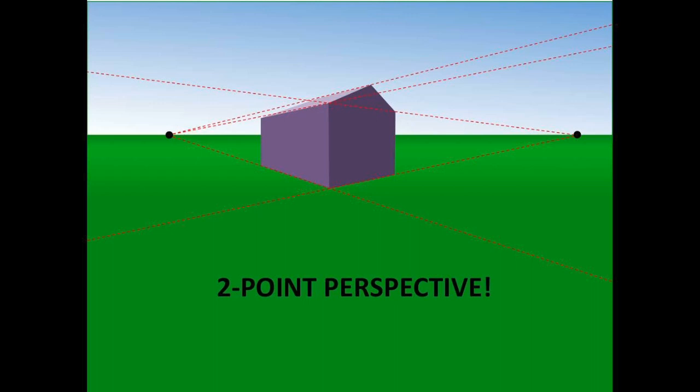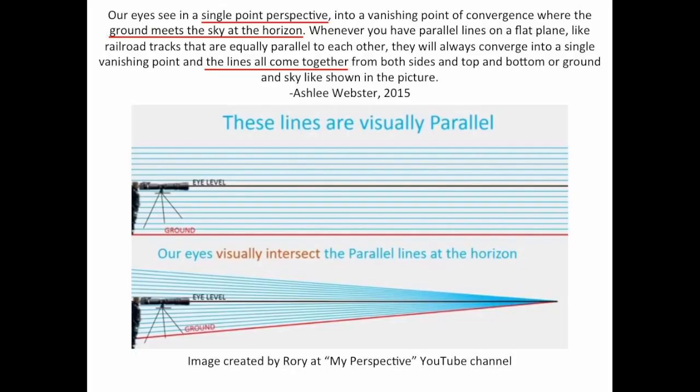And if you want to draw a three-dimensional structure a little more accurately, two-point perspective usually works better than one-point perspective. There is not always one single vanishing point that all parallel lines intersect with. Sometimes there's two. And if we compare the two, here's a house drawn in one-point perspective. Here's one drawn in two-point perspective. I think you'll agree the one on the right is a little more realistic than the one on the left. So let's look again at what we were told at the beginning. Our eyes see in a single-point perspective into a vanishing point of convergence where the ground meets the sky at the horizon. And not all of that is true in most cases. We don't always converge into a single vanishing point where all the lines come together.